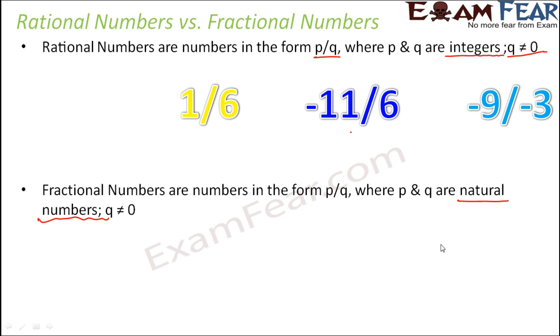When we say that p and q both need to be natural numbers, what are natural numbers? Numbers starting from one and ending at infinity. All the numbers between one and infinity are natural numbers. Which numbers are not considered in case of fractions? The negative numbers and zero are not considered as fractional numbers.